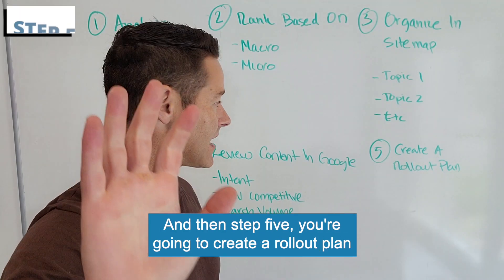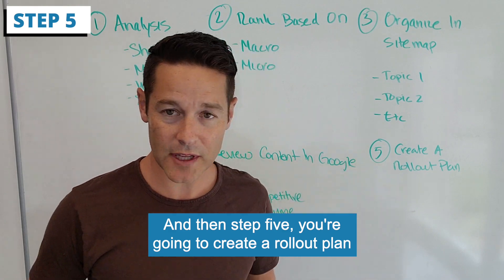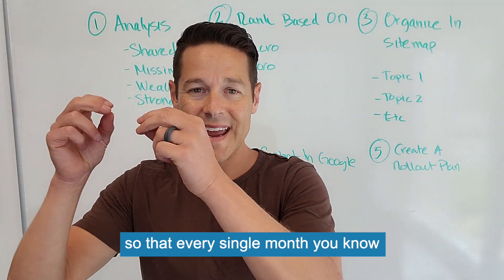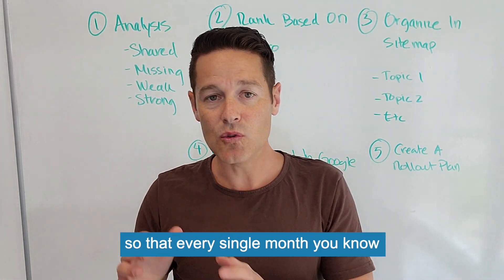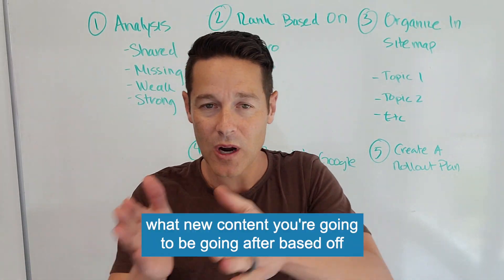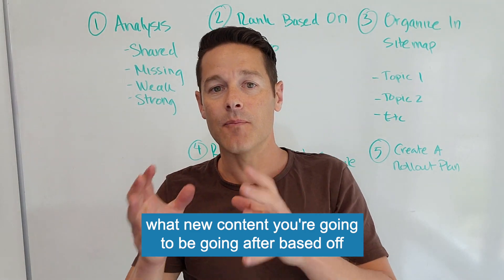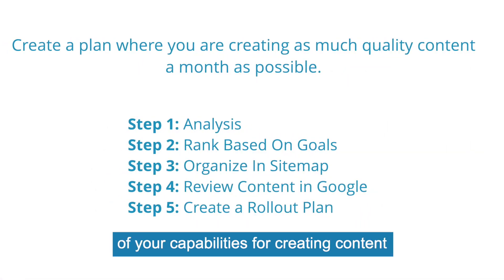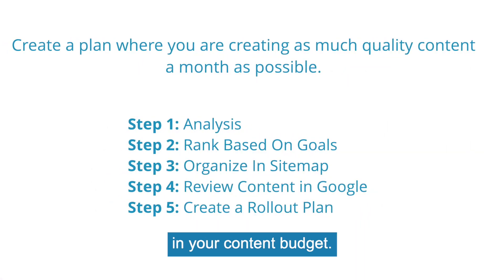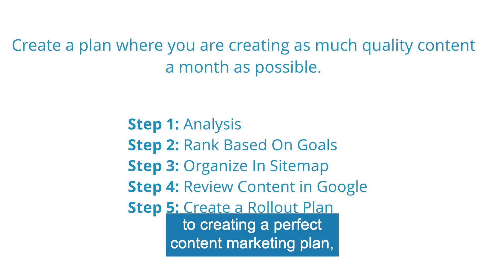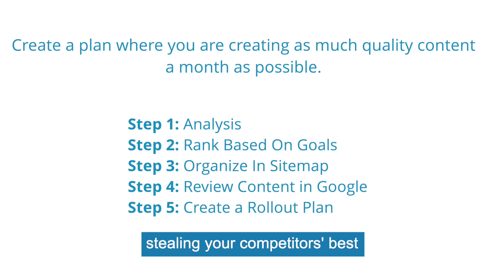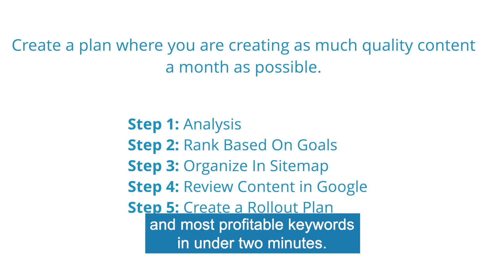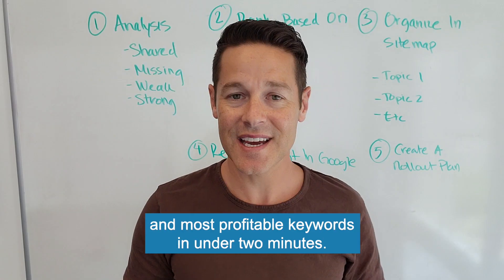Step five, you're going to create a rollout plan so that every single month you know what new content you're going to be going after, based off of your capabilities for creating content and your content budget. That is five steps to creating a perfect content marketing plan and stealing your competitor's best and most profitable keywords in under two minutes.